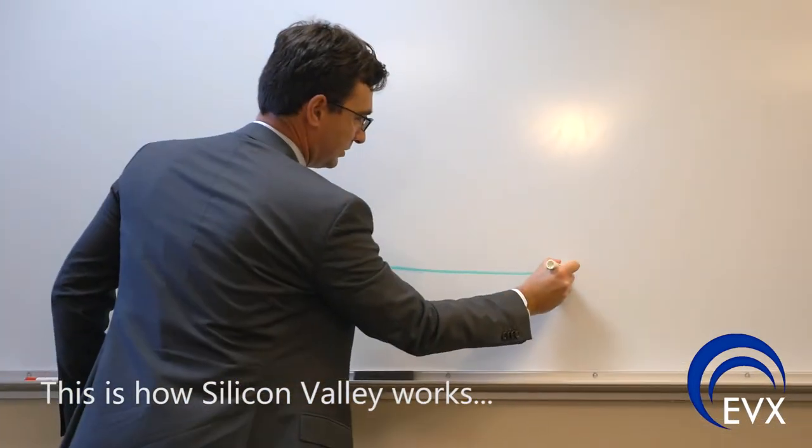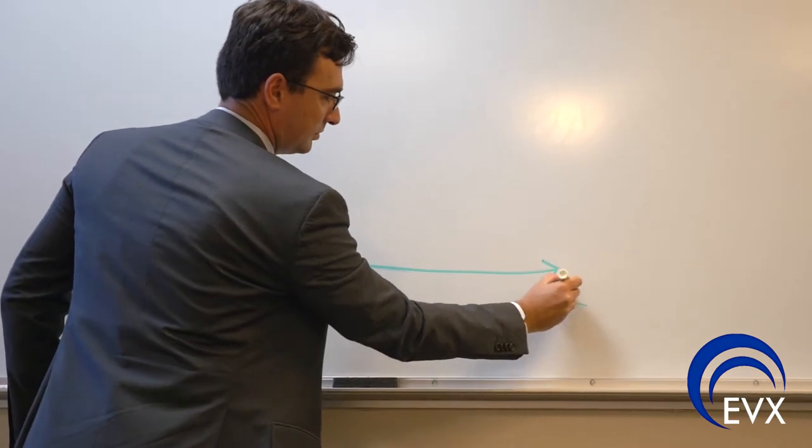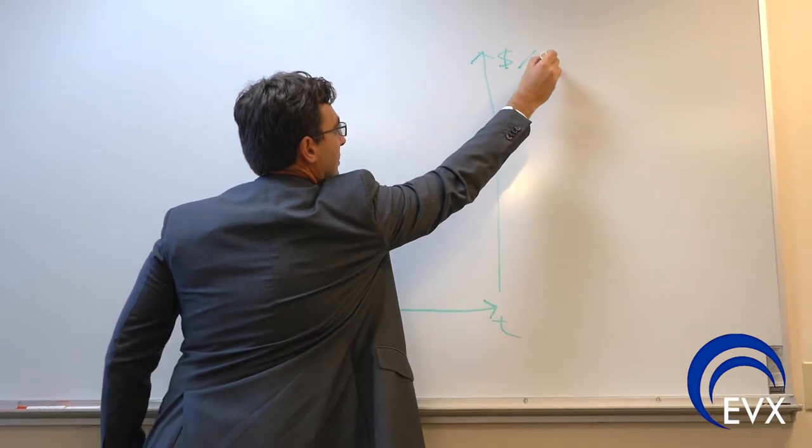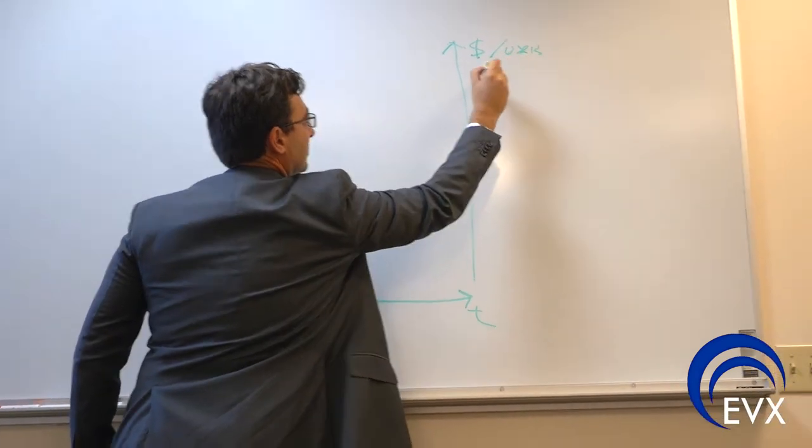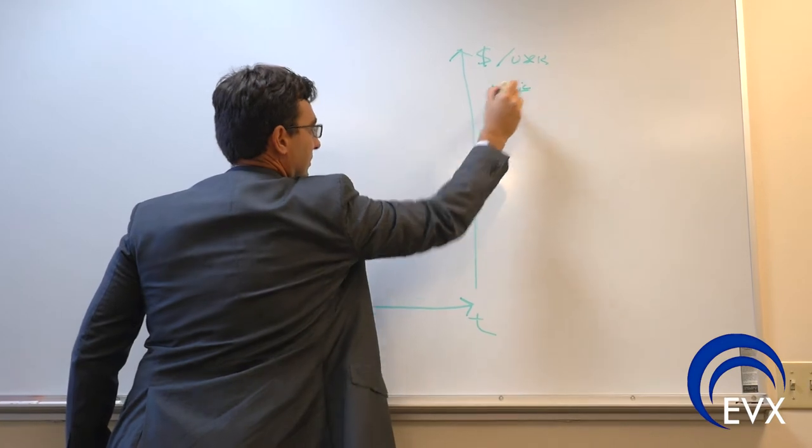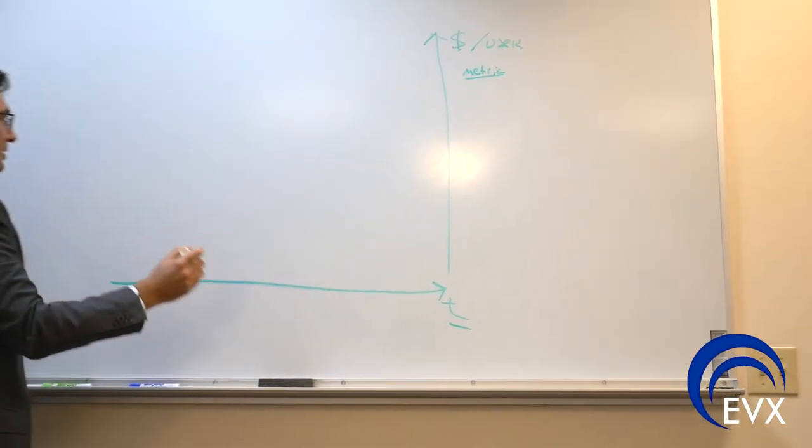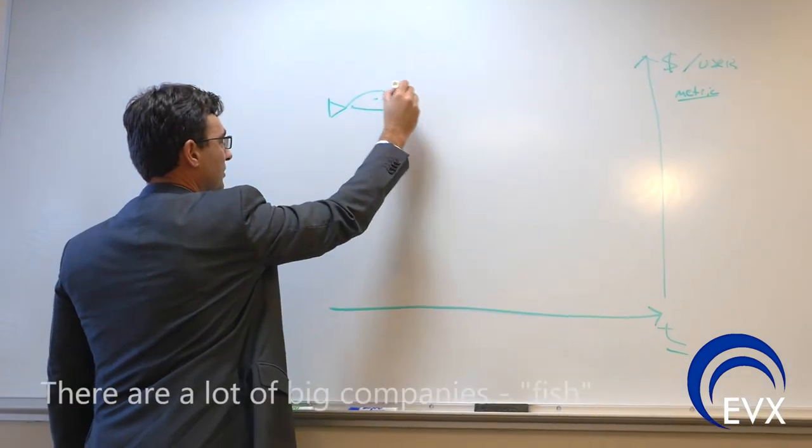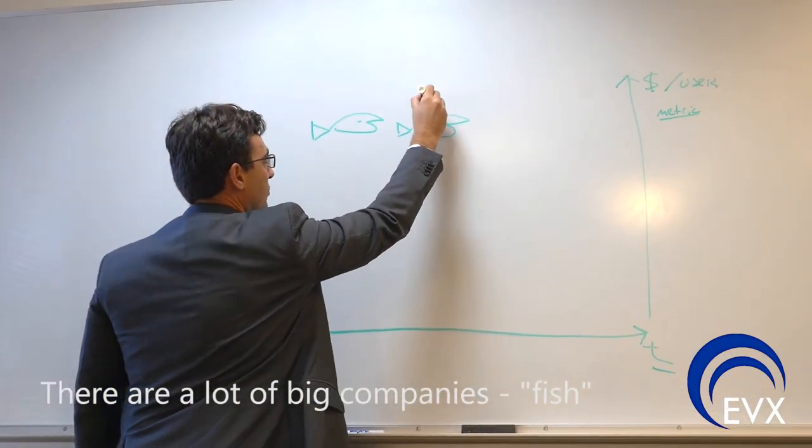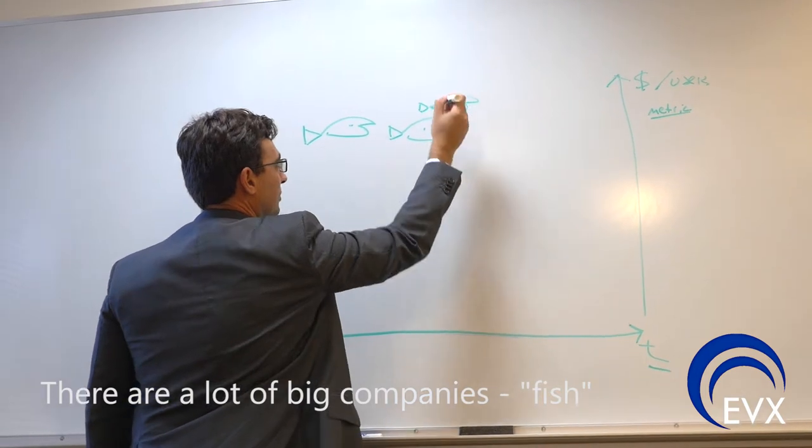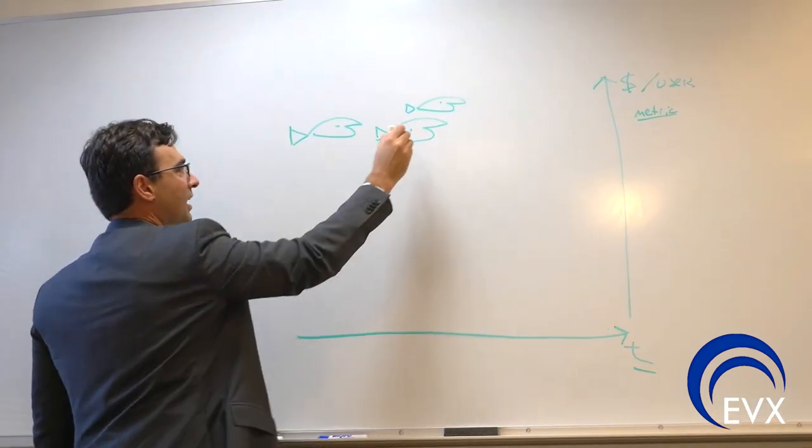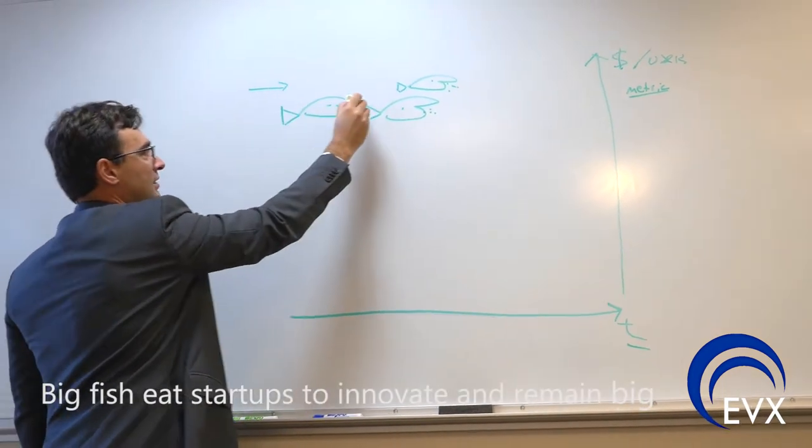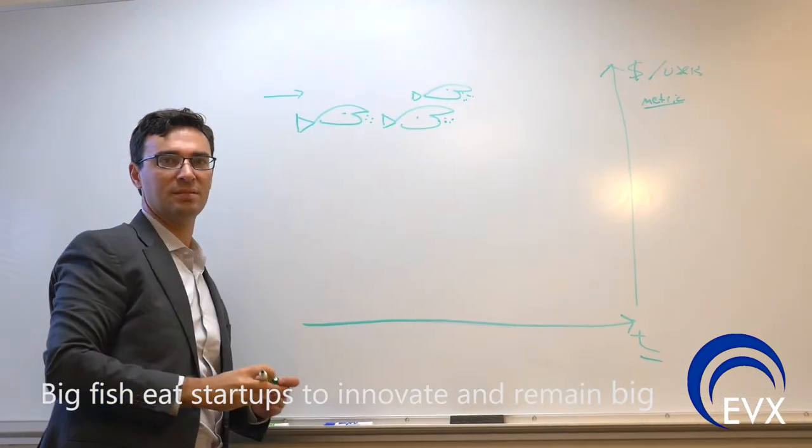So, startup cycle. This is time. And this is revenue or users or some kind of metric. Silicon Valley has got a lot of big companies that are like fish. Big fish. Good fish, not sharks. And they remain big by eating startups. They innovate by eating startups.